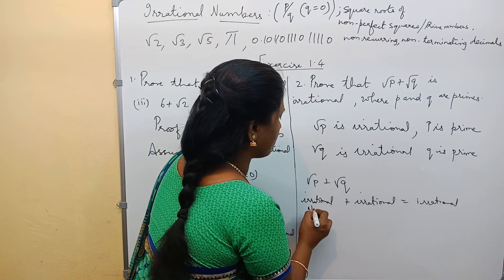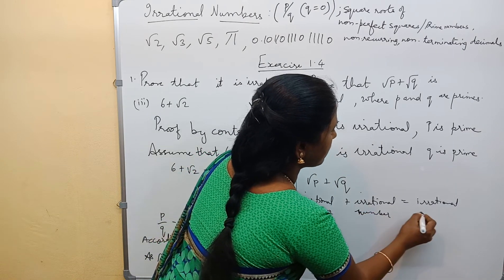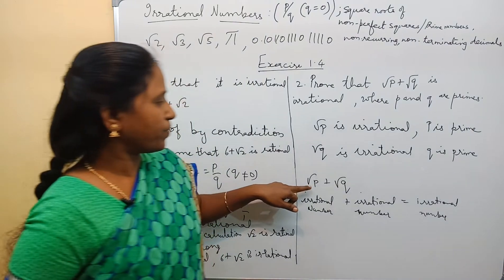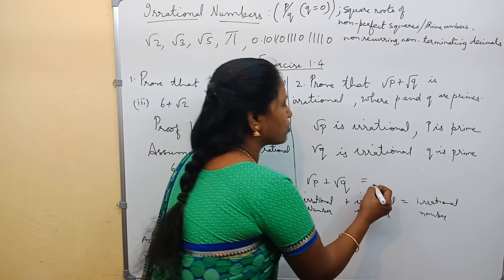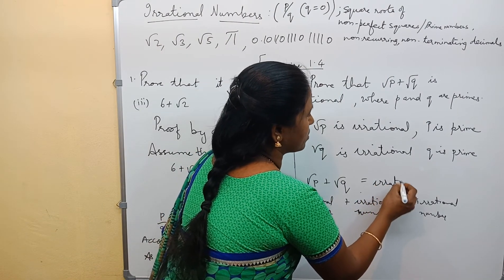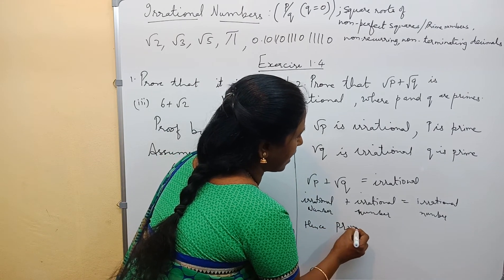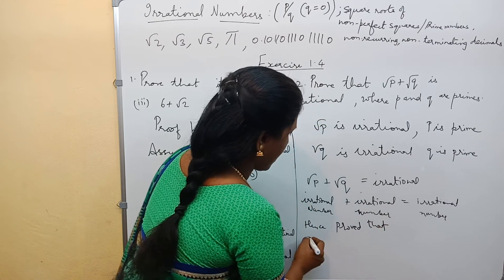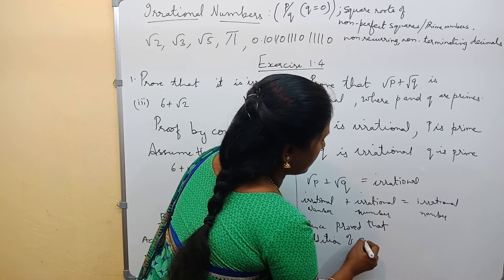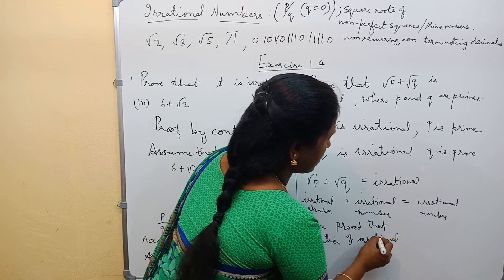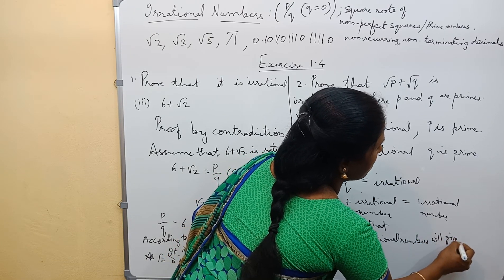When we calculate irrational plus irrational, it will give you an irrational number. Root p is irrational and root q is also irrational, so automatically the resultant will also be irrational. Hence proved that addition of irrational numbers will give an irrational number.